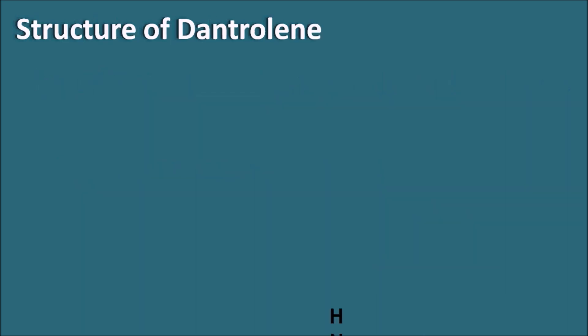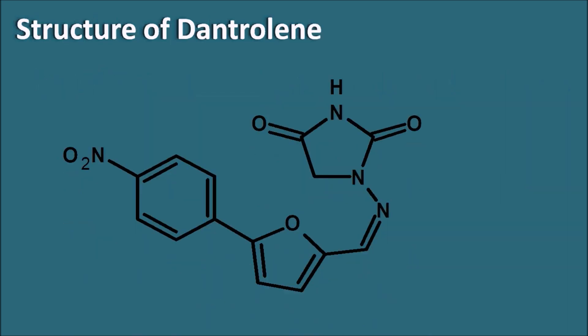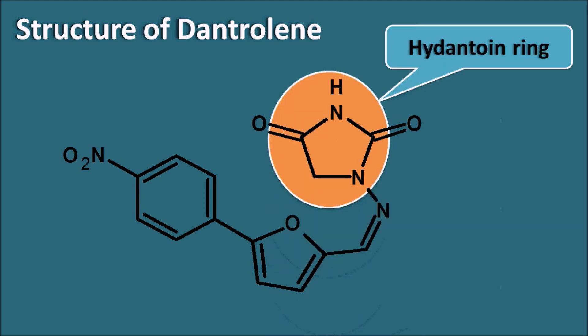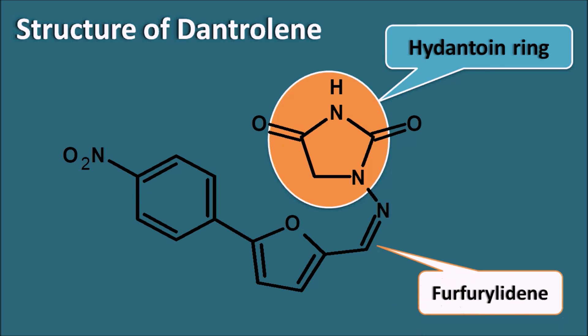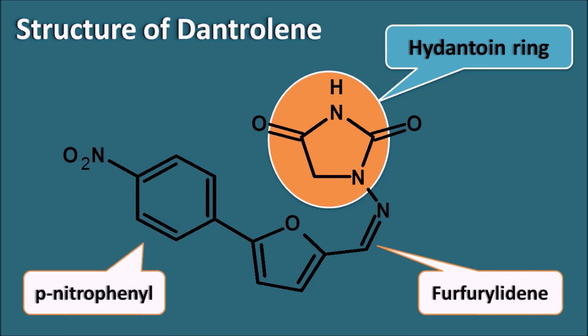Regarding the structure of dantrolene: it contains a hydantoin ring, similar to other drugs like phenytoin, which is an anti-epileptic drug. In dantrolene, an amino group is attached at the first position of the hydantoin ring, making it a 1-aminohydantoin, which is attached to a furfurylidene ring system. This furfurylidene chain is further attached with a para-nitrophenyl group at the 5th position of the furan ring.